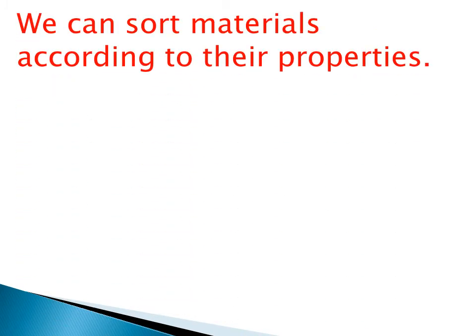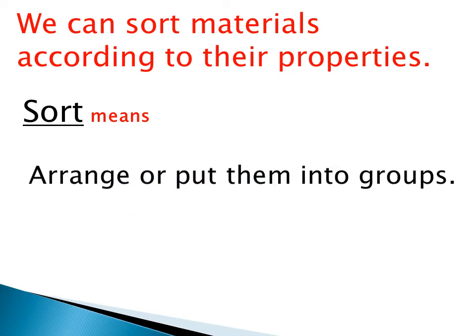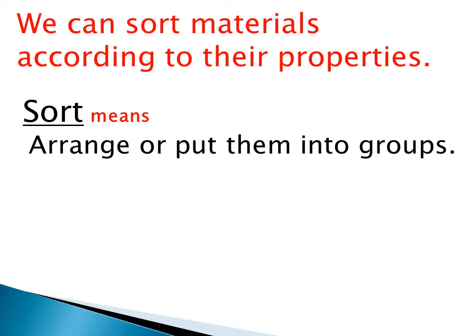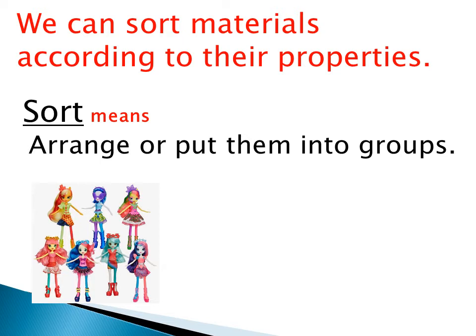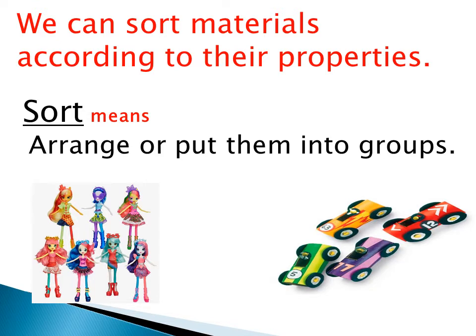We can sort materials according to their properties. The properties mean we are going to describe the objects. Objects mean things. How are we going to sort? Sorting means we are going to arrange or put them into groups — like when your mom asks you to put all the dolls in the same box, and all the cars in the same place. When you do this, putting everything similar together in the same group, this is called sorting.